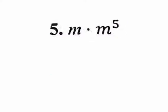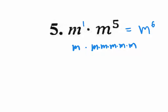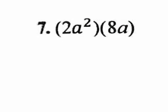Number five is too easy. There's an invisible exponent of 1 right there, and you simply add 1 plus 5 to get M to the sixth. M to the fifth is really M times M times M five times, and then there's another M — a total of six. But obviously you're not going to show all that work; you just add 1 plus 5 to get M to the sixth.